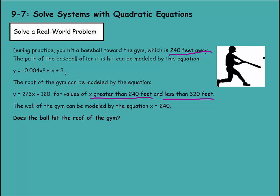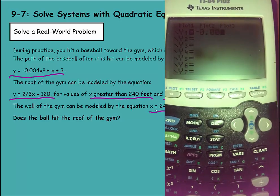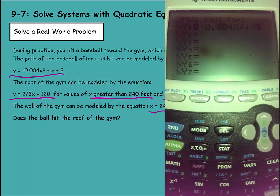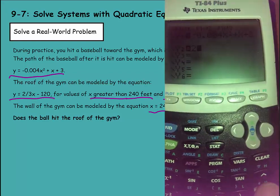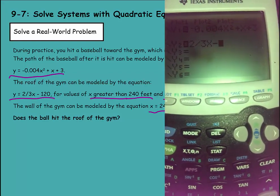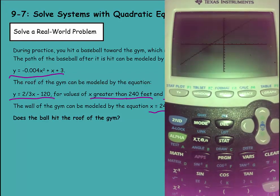What we can do is we can plot this with our calculator. And as we model the path of the ball, we can see if that's going to be high enough to hit the gym after 240 feet but before 320 feet. I can make this my first equation in my calculator and this the second equation. So I pressed y equals and now I enter negative 0.004x squared plus x plus 3. Now I can go down to my second equation. I can enter 2 thirds x minus 120. And then hit graph.